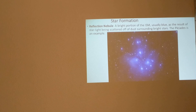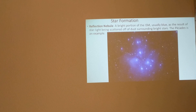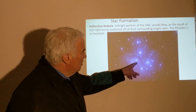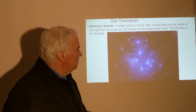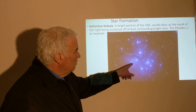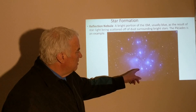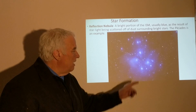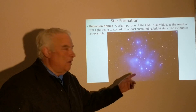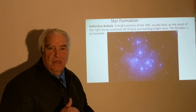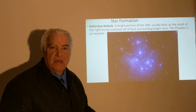A nebula is a cloud of gas. A particular kind is the reflection nebula — a bright portion of the interstellar medium, usually blue, resulting from starlight being scattered off dust surrounding bright stars. The Pleiades is an example: a cluster of about six bright stars visible to the naked eye. With a photograph and a large telescope, we can see the blue nebula around it, which tells us these stars are young because they are still surrounded by the gas and dust from which they formed.